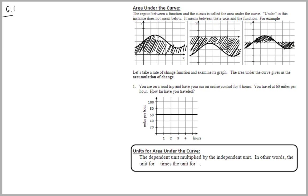Let's make an example where you can use this. You're on a road trip and you have a car on cruise control for four hours. You travel at 60 miles per hour for these four hours. How far have you traveled? We know that four hours is our maximum.